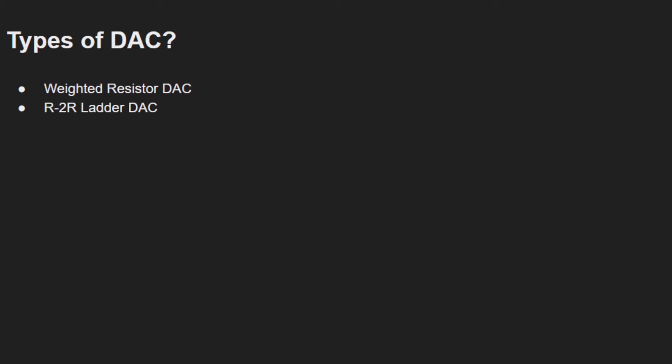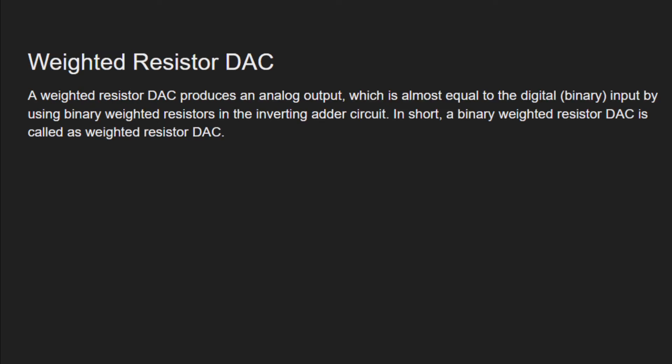There are two types of digital-to-analog converters. The first one is the weighted resistor digital-to-analog converter, and the second one is the R2R ladder digital-to-analog converter. Let's begin with the first type.